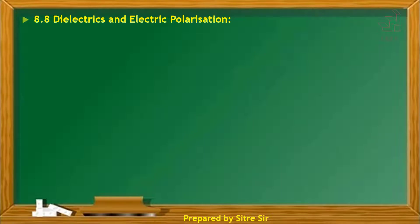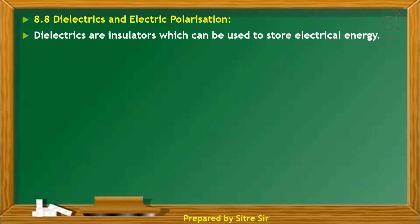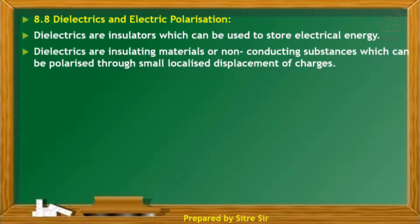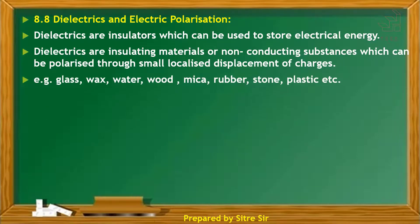The next point is dielectrics and electric polarization. Dielectrics are insulators which can be used to store electrical energy. They are insulating materials or non-conducting substances which can be polarized through small localized displacement of charges. Examples include glass, wax, water, wood, mica, rubber, stone, and plastic. These are dielectric materials.